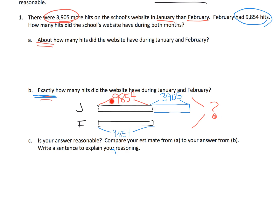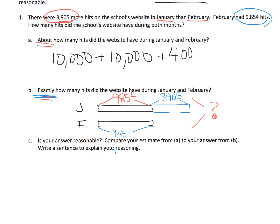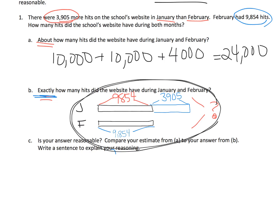Another way we could have done it is just go 9,854 plus 9,854 plus 3,905 — make it three separate numbers and add. In fact, I might even do that for my estimation. I might say 9,854 is pretty close to 10,000, plus another 10,000 for the second 9,854 down here, and then that 3,905 is pretty close to 4,000. I'm using basically front-end estimation, and I can see that this adds up to be about 24,000. So when we do our actual mathematics, my answer had better be pretty close to 24,000 — that's the idea.